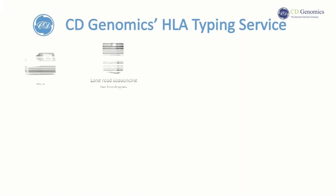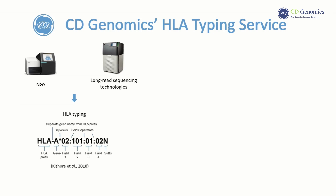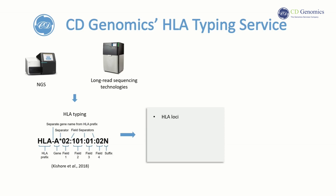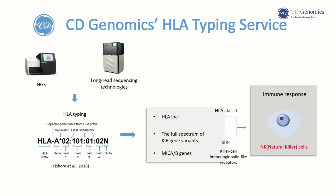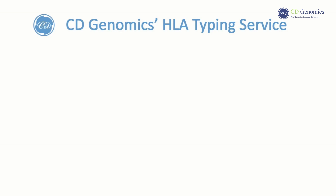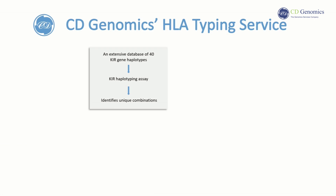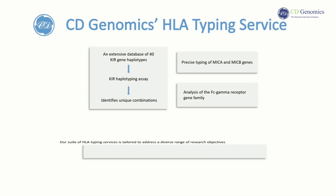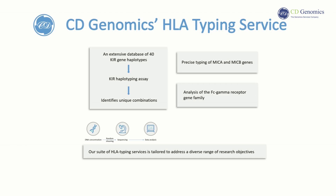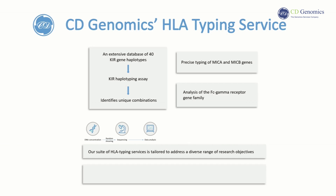Finally, let's introduce CD Genomics HLA Typing Service. CD Genomics provides a top-tier HLA typing service utilizing advanced NGS and long-read sequencing technologies. Our comprehensive genotyping procedure encompasses HLA loci, the full spectrum of KIR gene variants, and MICA/MICB genes. NK cell function, crucial in immune response, depends significantly on the interplay between KIRs and HLA Class I molecules. MICA and MICB, members of the MHC class I chain-related gene family, interact with the NK cell receptor NKG2D. Leveraging an extensive database of 40 KIR gene haplotypes, our KIR haplotyping assay accurately identifies unique combinations. We also offer precise typing of MICA and MICB genes and analysis of the FC gamma receptor gene family. Our HLA typing services are tailored for diverse research objectives and are intended solely for research purposes, not diagnostic procedures.